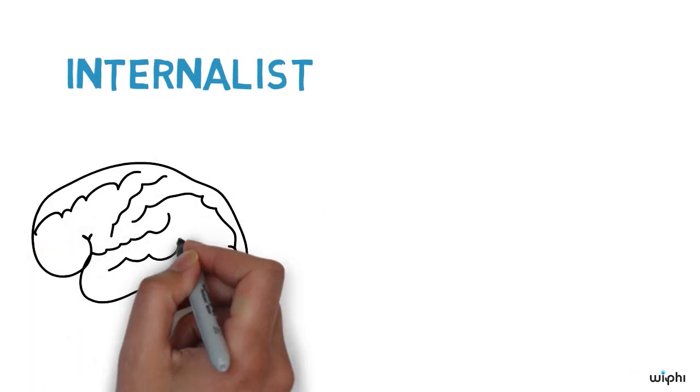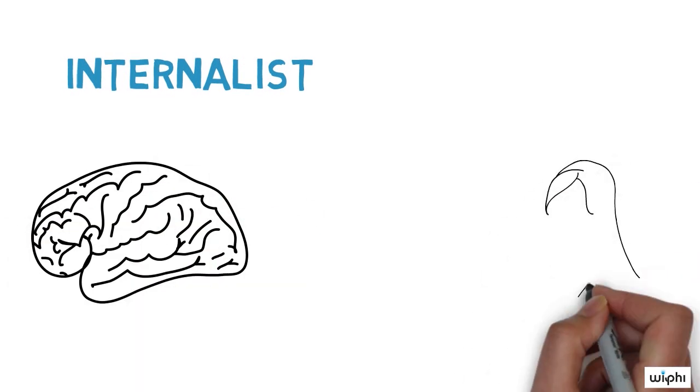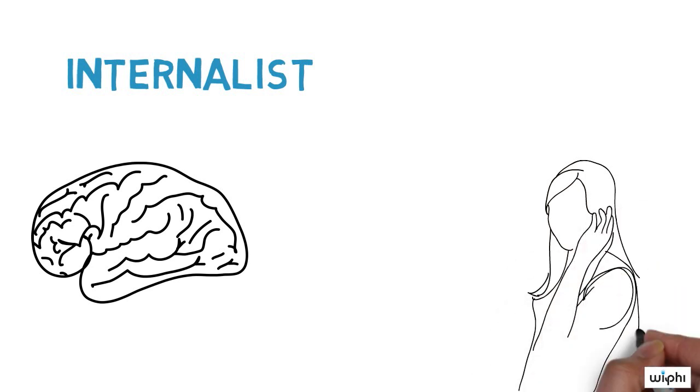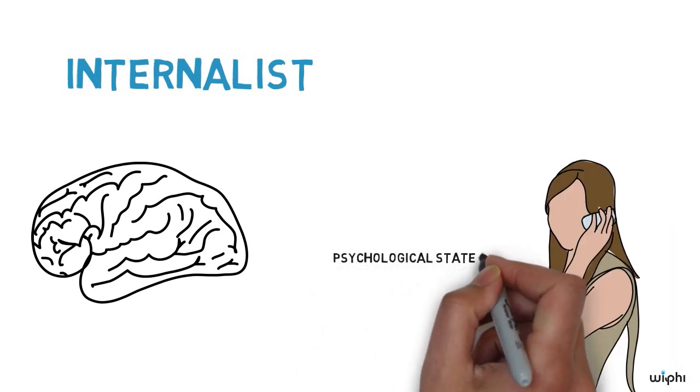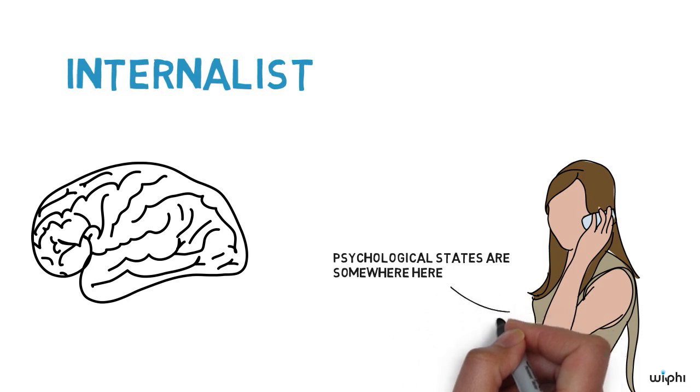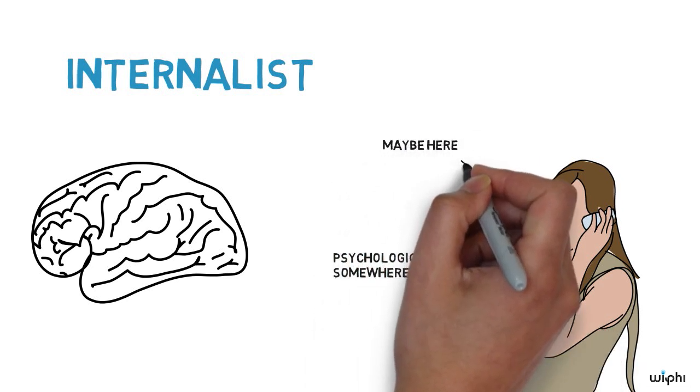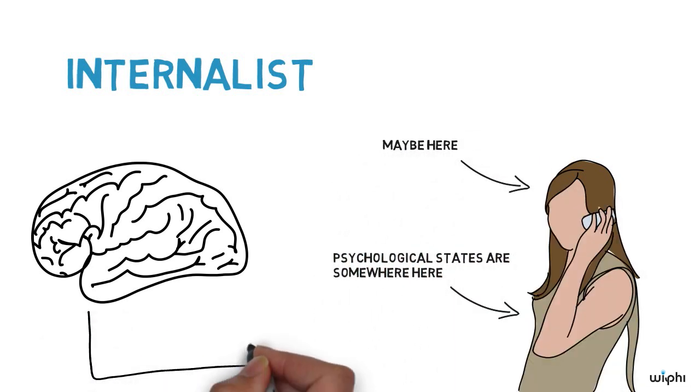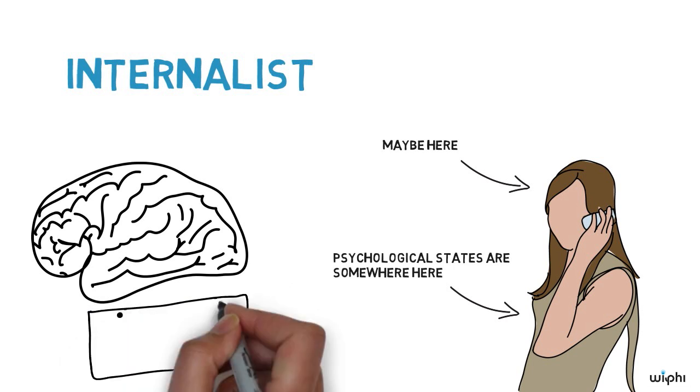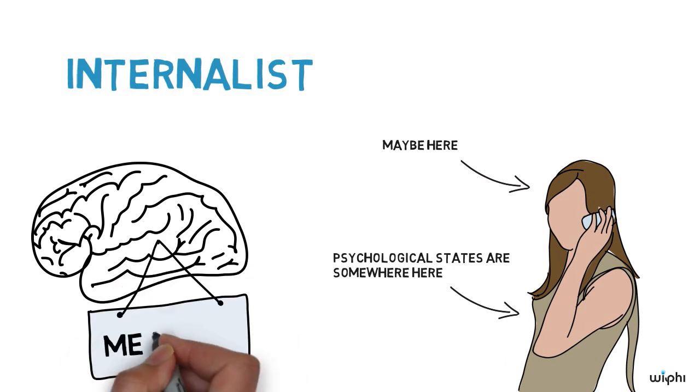Internalists argue that mental or psychological states determine meaning. These theories are called internalist as the psychological states are inside individual persons, maybe inside individual persons' heads. These psychological states are the things internalists say fix meaning.